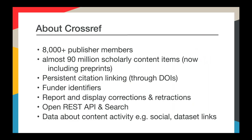So if you're not familiar with Crossref, we are a not-for-profit membership organization for scholarly publishers. We were founded in 2000 with 12 publishers as members, and our initial goal was to fight the link rot problem by helping our members assign persistent identifiers — those being DOIs — to scholarly materials. So if you assign a DOI to a journal article and that journal article moves to a different platform or URL, the DOI link will still be persistent. In 2017, we have over 8,500 members and we're still growing every day.